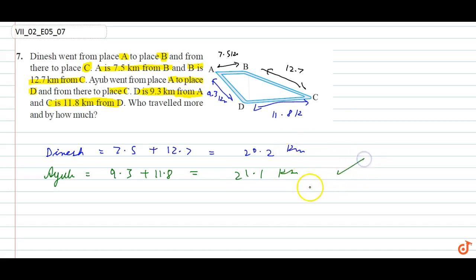So Ayub traveled more distance. And by how much difference? 21.1 minus 20.2. Ketna aega? 0.9.